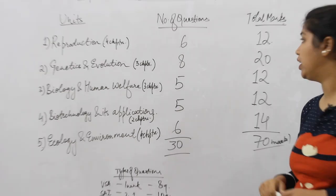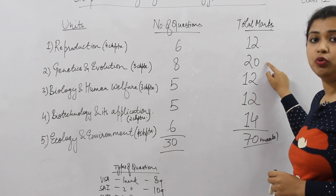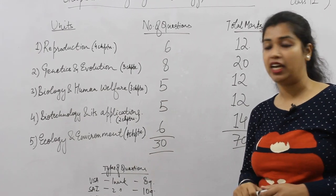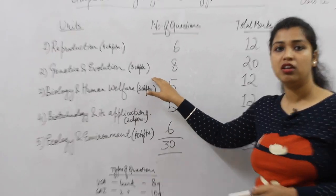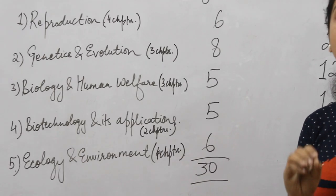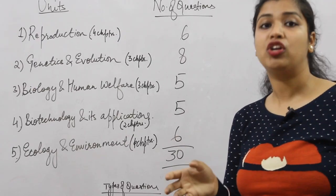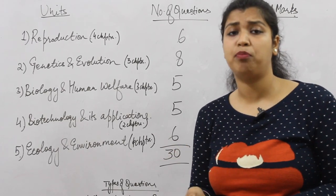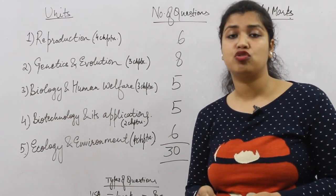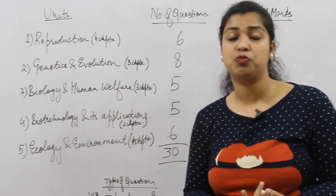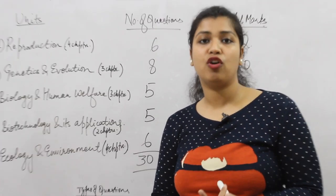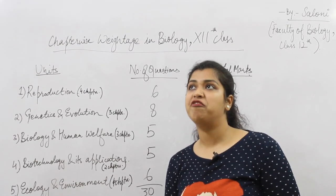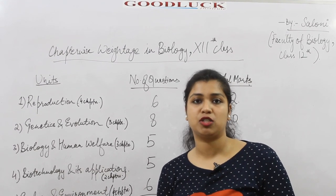According to the weightage, unit two and unit five become the most important units. In genetics and evolution, the molecular inheritance chapter is very important as it consists of replication, transcription, central dogma, packaging of DNA, Griffith's experiment, Hershey and Chase experiment, and Meselson and Stahl's experiment.